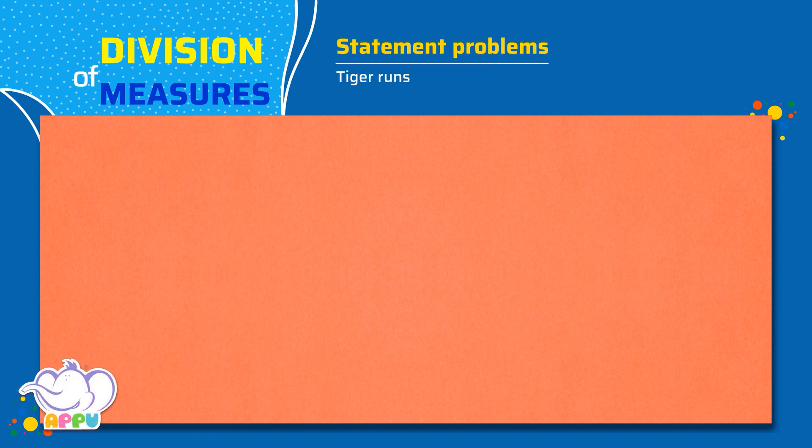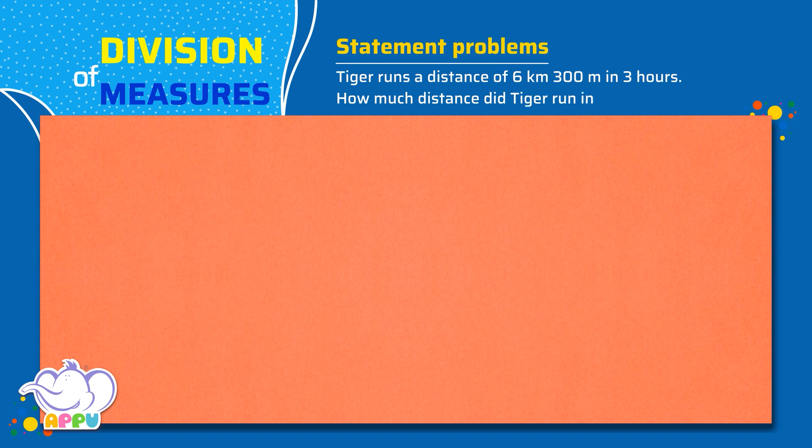Tiger runs a distance of 6 kilometers 300 meters in 3 hours. How much distance did Tiger run in 1 hour?